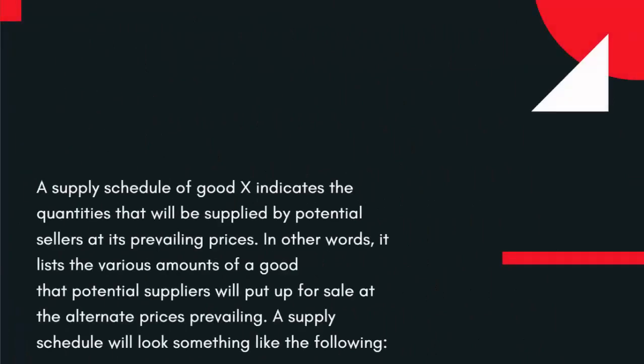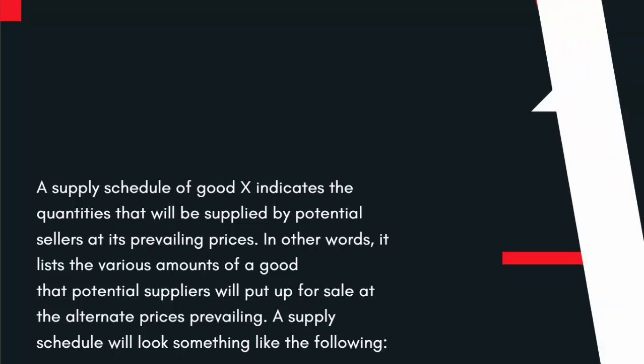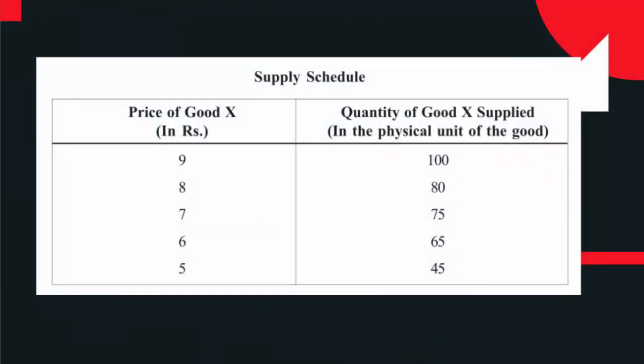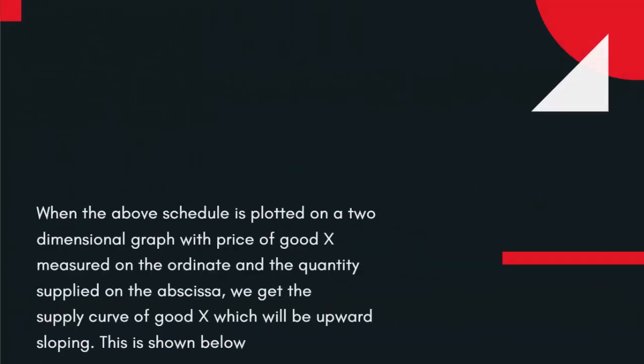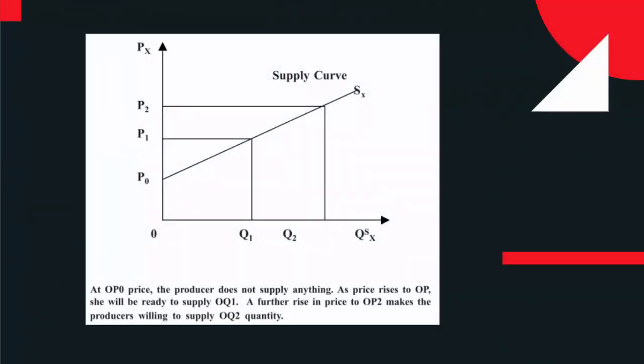A Supply Schedule of good X indicates the quantities that will be supplied by potential sellers at its prevailing prices. In other words, it lists the various amounts of a good that potential suppliers will put up for sale at the alternate prices prevailing. A Supply Schedule will look something like the following. When the above schedule is plotted on a two-dimensional graph with price of good X measured on the ordinate and the quantity supplied on the abscissa, we get the Supply Curve of good X, which will be upward sloping.